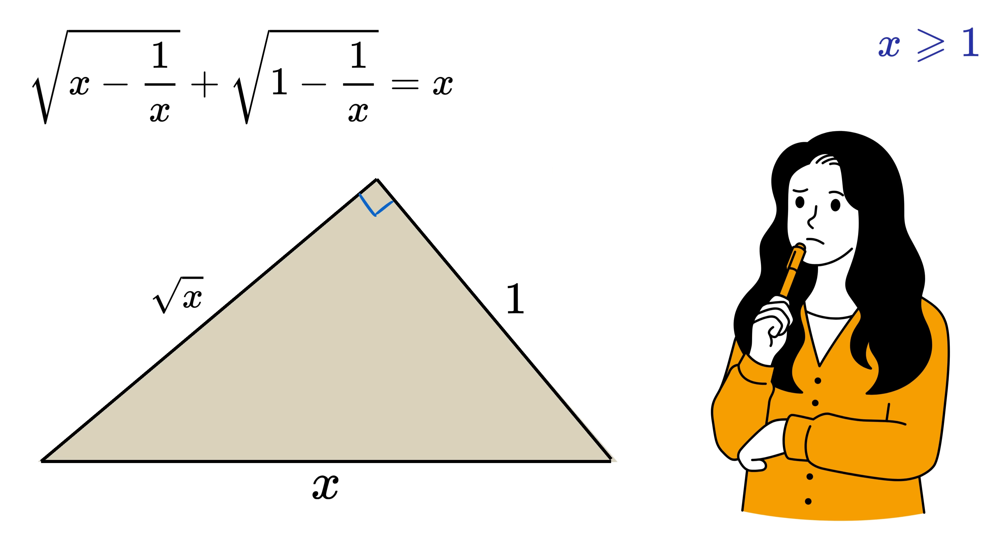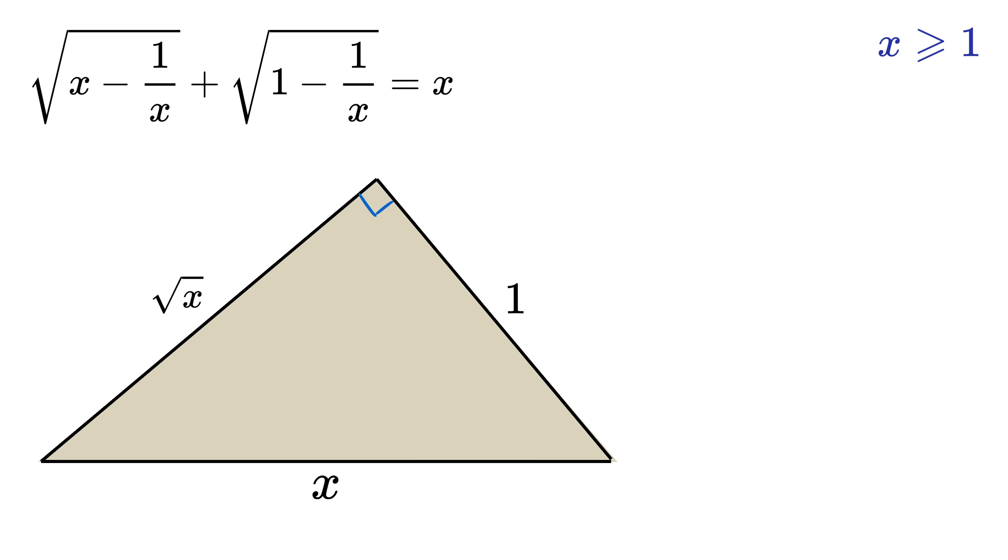So, what to do next? Yes, right! We will be using Pythagoras theorem here. We get 1 square plus root x square equals x square. So, we get x squared equals x plus 1. On rearranging it, we get this quadratic equation, and on solving it...